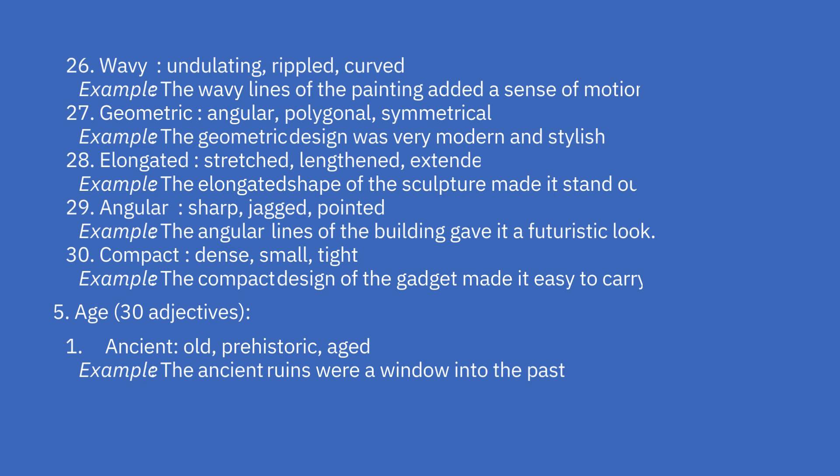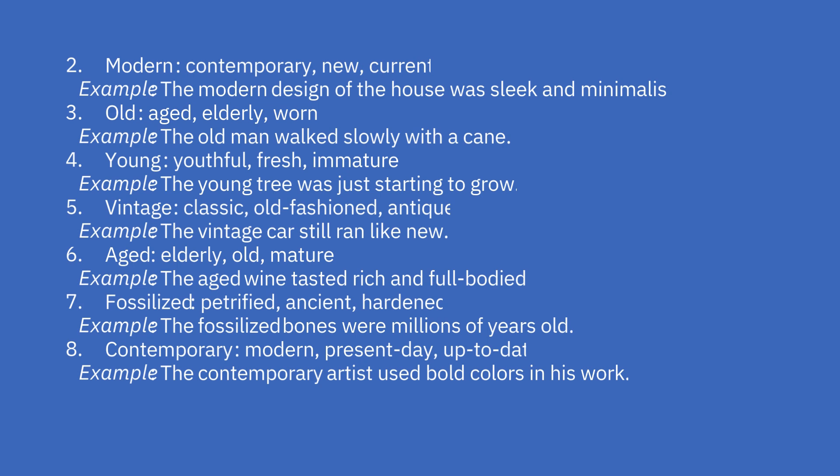Age adjectives — 30 adjectives. 1st: ancient — old, prehistoric, aged. Example: the ancient ruins were a window into the past. 2nd: modern — contemporary, new, current. Example: the modern design of the house was sleek and minimalist. 3rd: old — aged, elderly, worn. Example: the old man walked slowly with a cane.